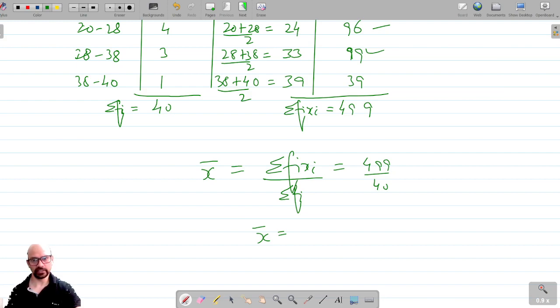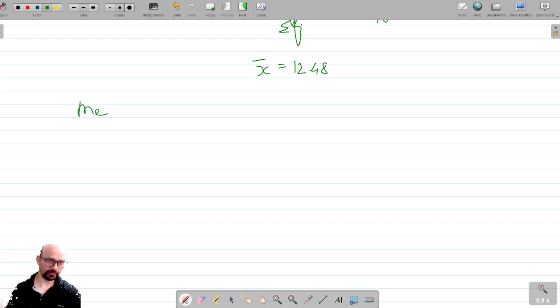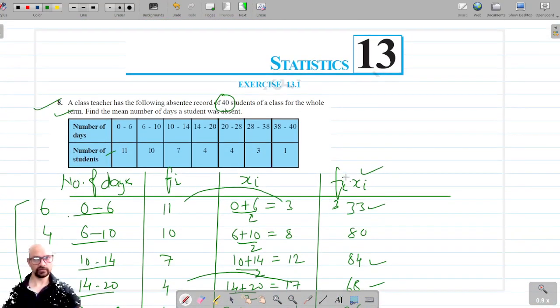So this will give me the answer 12.48. We can write the mean number of days a student was absent, that is on an average a student was absent, is equal to 12.48. This finishes our question number 8. Thank you for watching. Let's move on to question number 9.